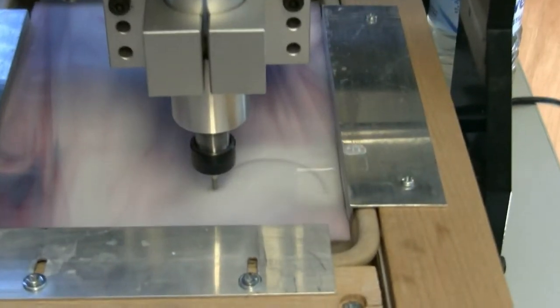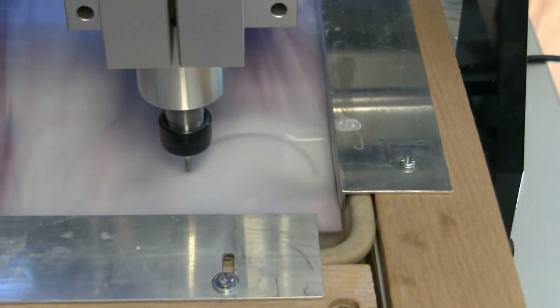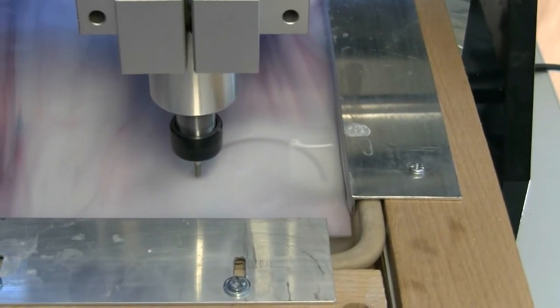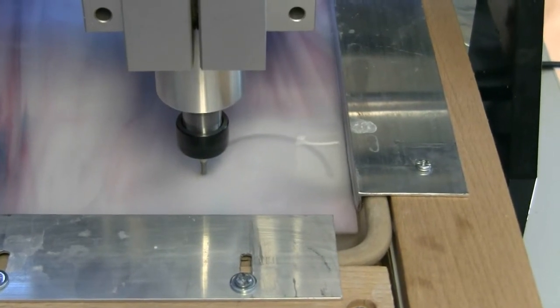So here we go, we're maybe 50% of the way through. I'm milling a little bit faster. This is milling at 10mm per minute. So it's relatively slow, but better slow than broken.